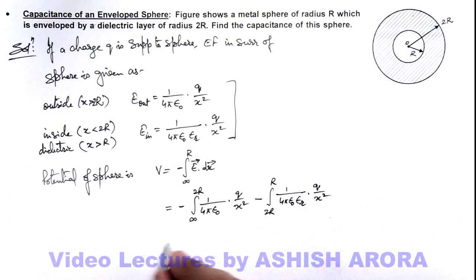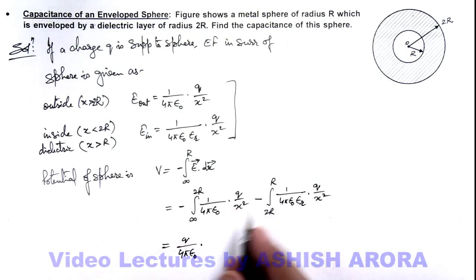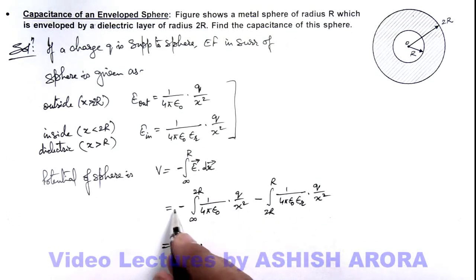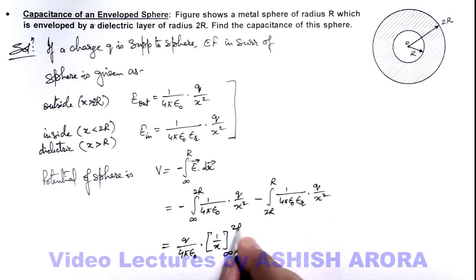So if we simplify this on integrating we are getting it as Q by 4π epsilon not. And integration of 1 by x square will result minus 1 by x, this minus gets cancelled out. So it is 1 by x and we put limit from infinity to 2R.